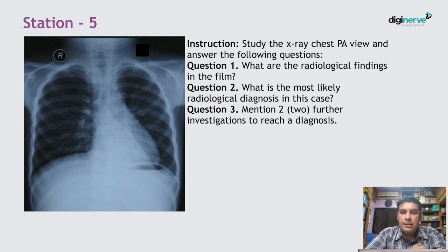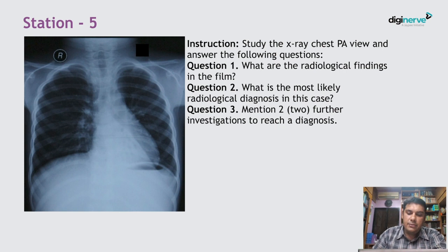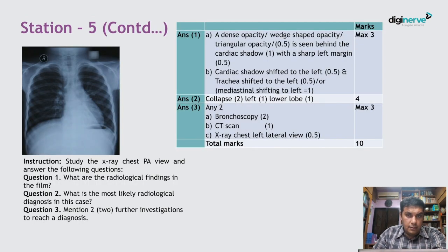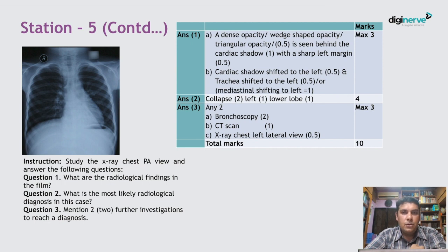Station 5: Look at this chest X-ray and answer the following questions. What are the radiological findings in the film? What is the most likely radiological diagnosis? And mention two further investigations to reach a diagnosis. The radiological findings are that a dense opacity, wedge-shaped or triangular opacity, is seen behind the cardiac shadow with a sharp left margin.